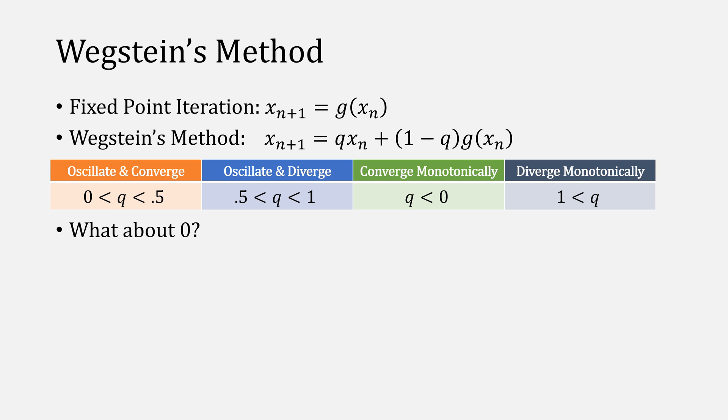You might be wondering, what about 0? If we chose a q of 0, then we essentially will eliminate the x sub n term and only go with g of x, which is basically fixed-point iteration.